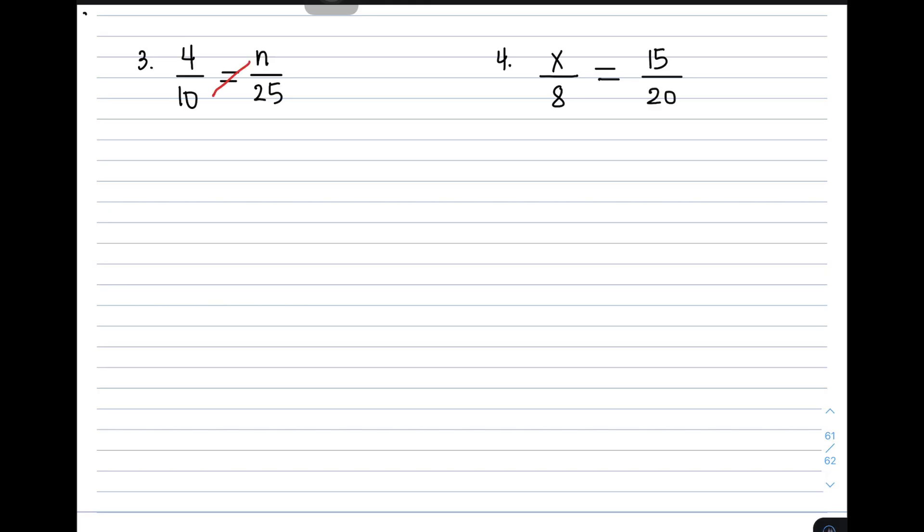10 times n, or n times 10, it will give you 10n. And then on the other part, we have 4 times 25, this will give you the product of 100.